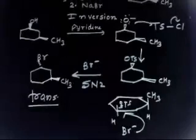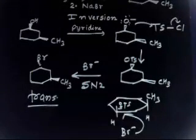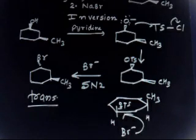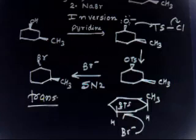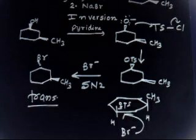These are easy problems — reactions of alcohols including stereochemistry. To summarize: with SOCl2 you get retention of configuration; with ZnCl2/HCl (Lucas reagent), a carbocation is formed so you get both cis and trans products; with PBr3, SN2 inversion occurs; with TsCl/pyridine followed by NaBr, SN2 inversion also occurs, giving the trans product.